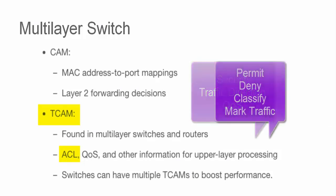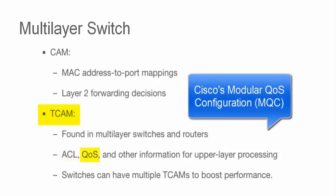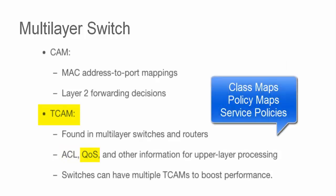ACLs can be used as part of the mechanism to permit, deny, classify, and mark traffic to secure, optimize, and protect network traffic. Incoming frames can be classified according to QoS parameters and the traffic can then be prioritized and rate limited. QoS decisions are also made by the TCAM in a single table lookup.